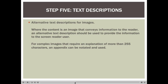The fifth step in creating an accessible PDF document is to add text descriptions to any images used in the document. There are two kinds of images used in documents: images that convey information, and images that are purely decorative. A photograph is probably going to convey information and will need a text description for somebody using a screen reader. Decorative elements like flourishes or decorative lines that don't convey any information don't need a text description — we're only talking about images that convey information.